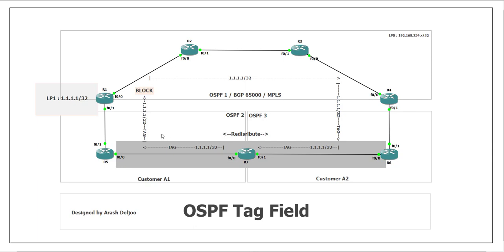The OSPF tag field has some functions. Assume we are advertising the routes of Customer A Site 1 to the MPLS Layer 3 VPN, and then these routes can be received by Customer A Site 2. Also, there is a router between the two sites where redistribution is configured, and we need to redistribute routes if we don't have connectivity via MPLS Layer 3 VPN.